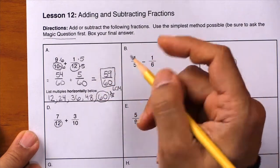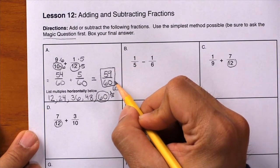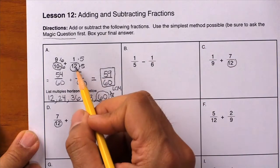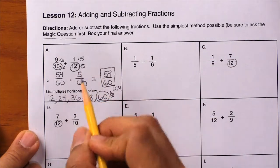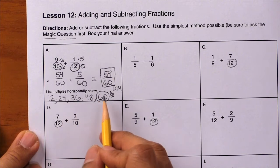And that is box A. Now in the subsequent problems, if students come across 12 in the denominator, they'll be able to use the same list to help them out.